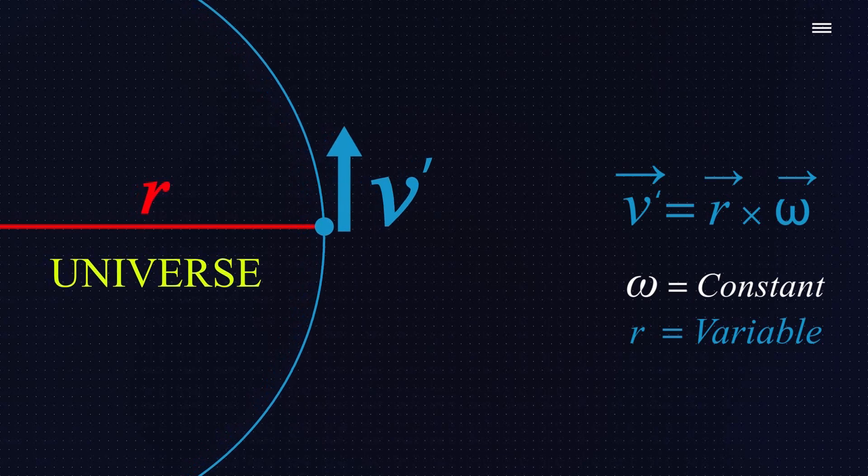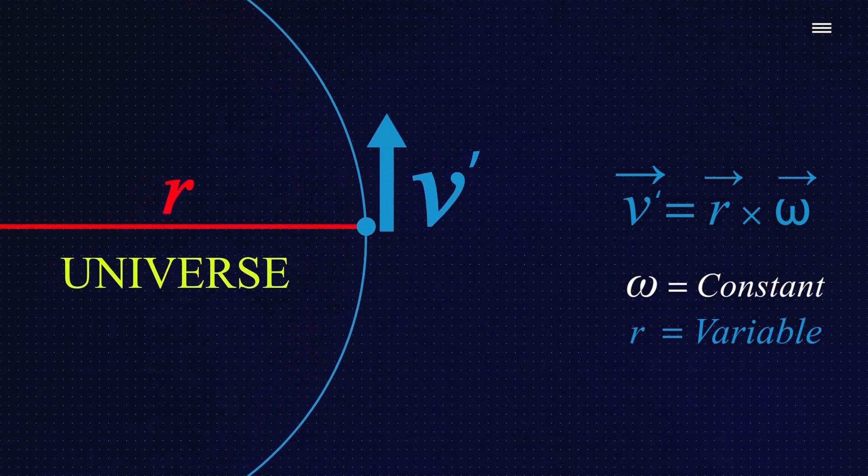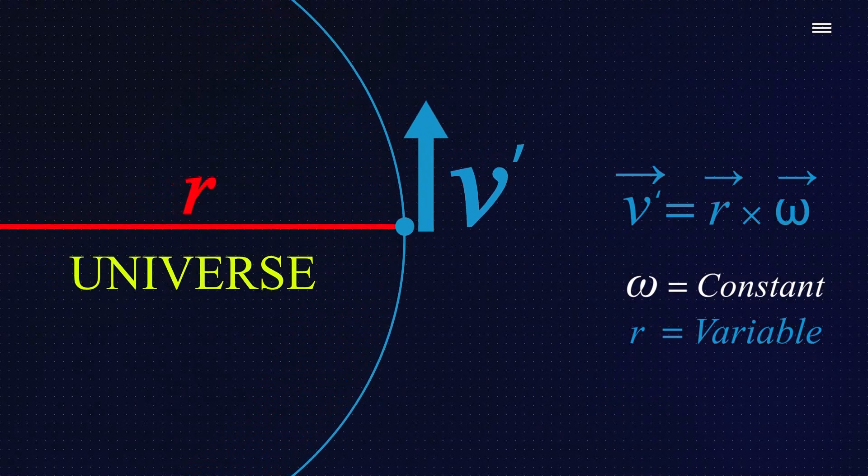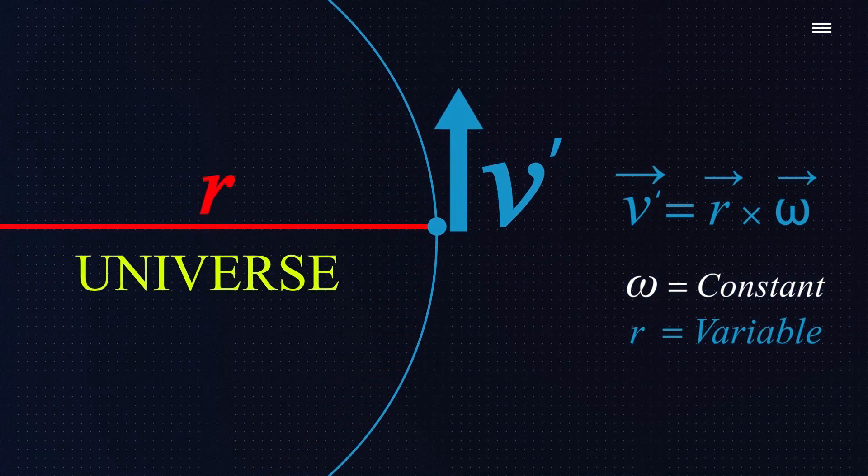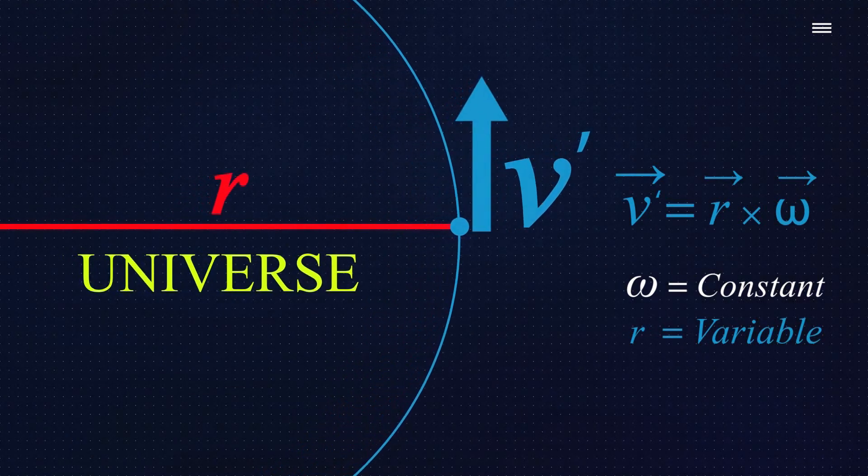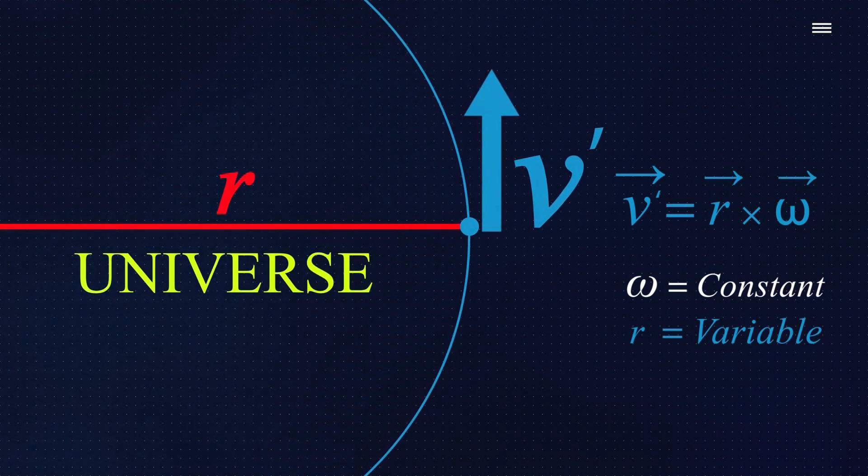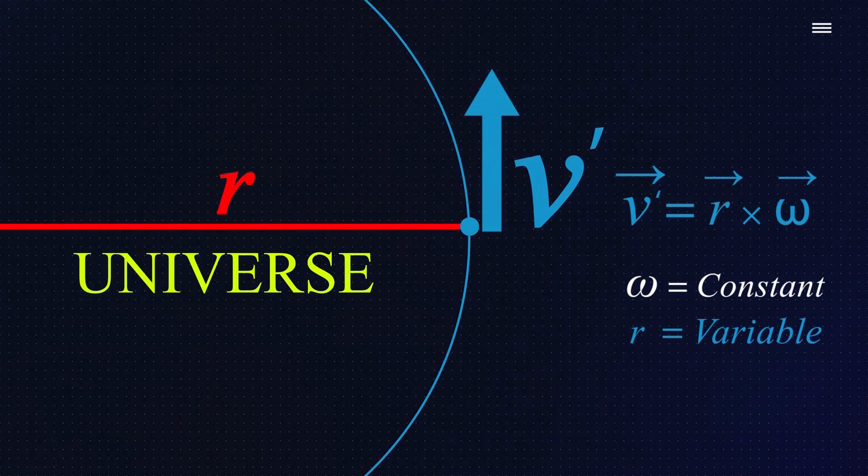After all, as the saying goes, as dark energy expands the radius of the universe, the radius of rotation and the universe's r is always increasing. And, consequently, our tangential velocity is always increasing.